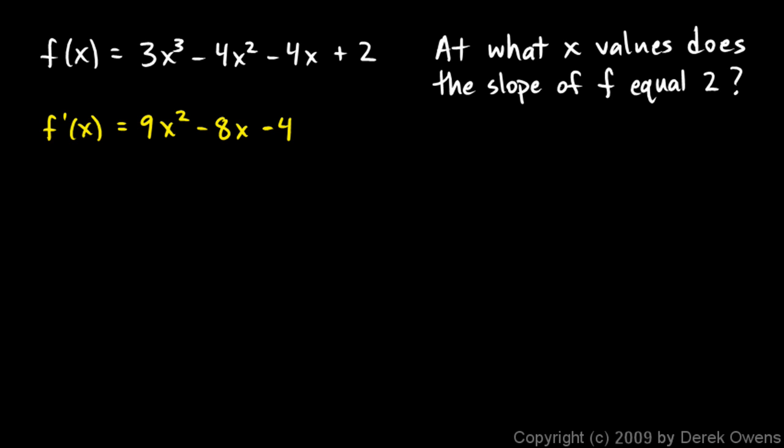So we need to know the slope at what x values, the slope is 2. Well, the derivative function tells us the slope of the original function. So this thing right here, this must be 2. So to do this, we set that equal to 2. We say 9x squared minus 8x minus 4 equals 2. And we solve for x. And we can solve this for x because this is a quadratic. And we can always solve a quadratic.